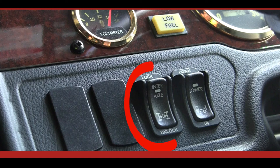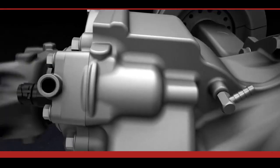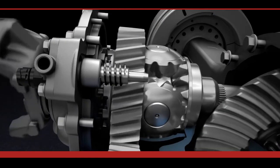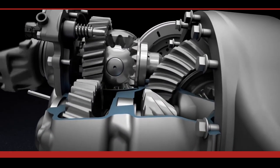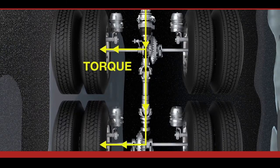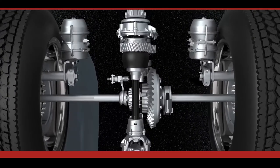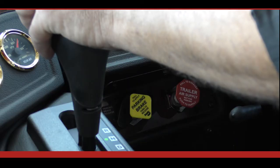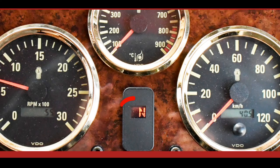The switch labeled interaxle diff lock controls the power divider or interaxle differential lock. By moving the switch, you can lock or unlock the main differential when the vehicle is stopped or moving below 40 kilometers an hour. When you lock or unlock the differential while moving, let up momentarily on the accelerator pedal to relieve torque on the gearing and allow full engagement of the clutch. If your vehicle has an automatic transmission, it may be necessary to shift the transmission momentarily to the neutral position to allow the main differential lock splines to fully engage or disengage.